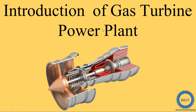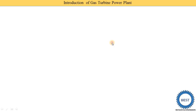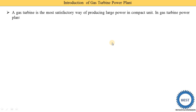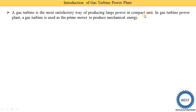In this video I explain the introduction of the gas turbine power plant. The gas turbine power plant is a more satisfactory way of producing large power in a compact unit. The size requirement of the gas turbine power plant is lower compared to the steam power plant — for the same capacity, the gas turbine requires a smaller unit, that's why it is called a compact unit.